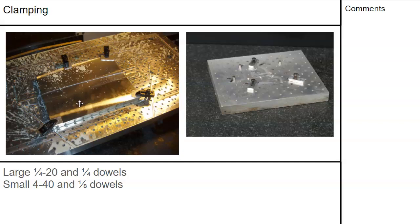The fly cut generates a pretty reflective finish — you can see the little swirl marks in both directions. The larger plate uses quarter-20s and quarter-inch dowels.